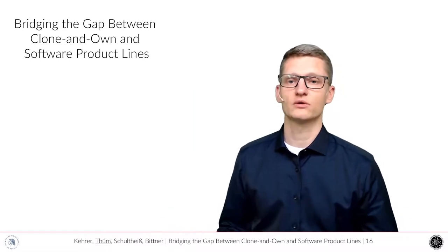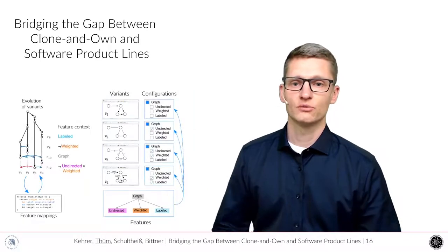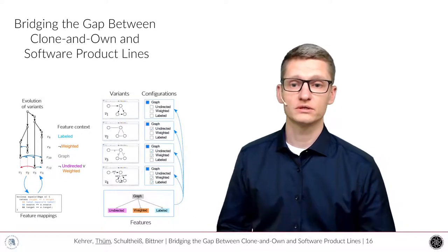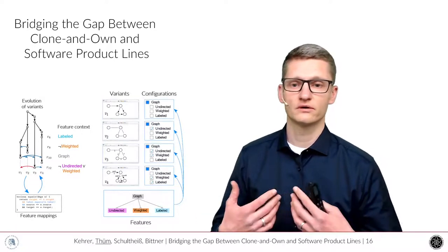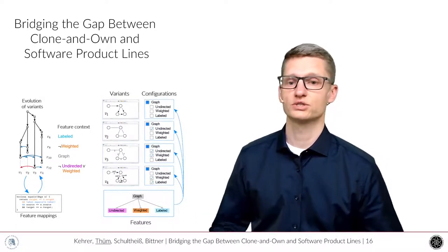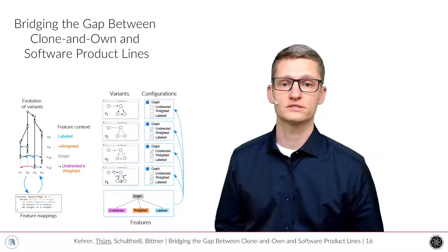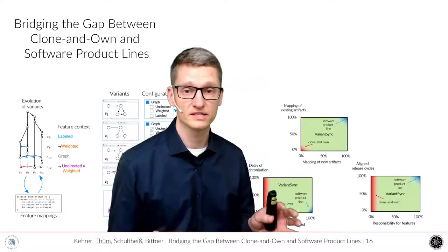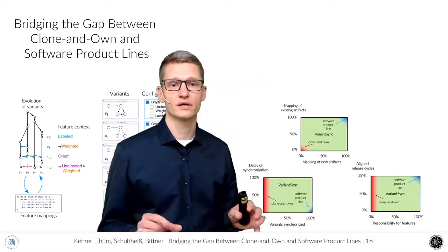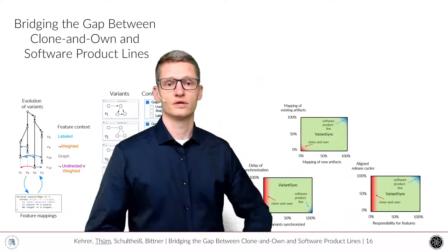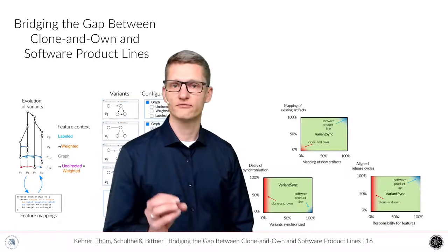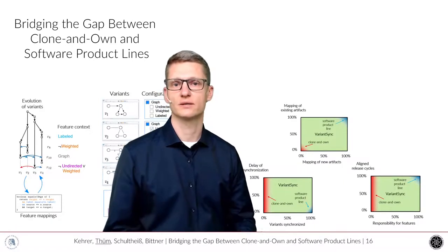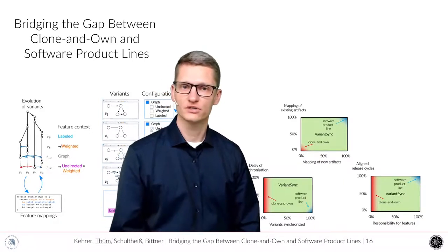We want to bridge the gap between clone-and-own and software product lines. We've shown you that we are aiming to reconfigure variants. We want to synchronize changes. We even want to create new variants. And we've shown you that there's a potential impact because there's a large gap in this area where clone-and-own and product lines really have fundamental differences and we need something in between. Thank you for your attention.